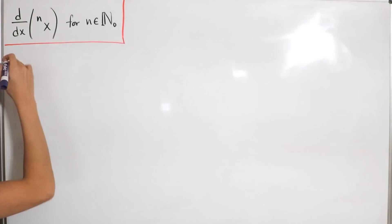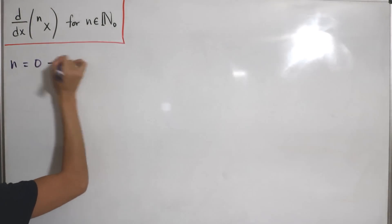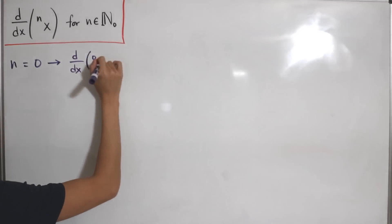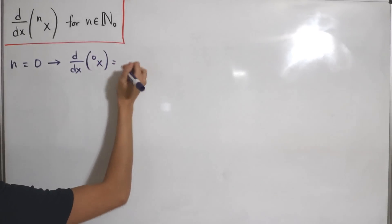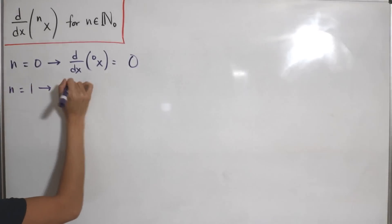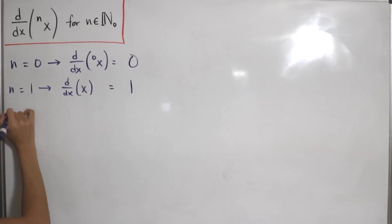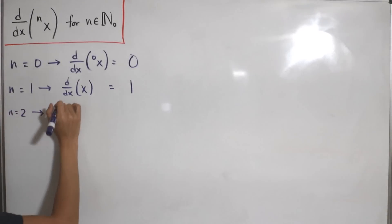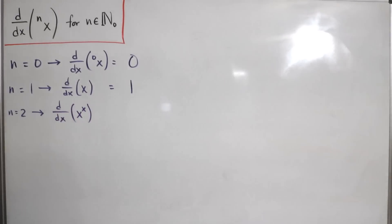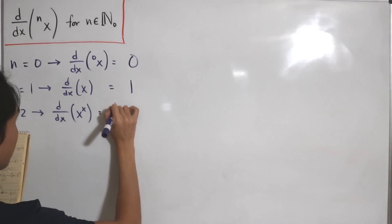Starting with n=0: the zero tetration of x equals 1, so its derivative is 0. For n=1: the derivative of x is just 1. For n=2, we get a nice logarithmic differentiation exercise with x to the power x. We rewrite it to apply implicit differentiation.